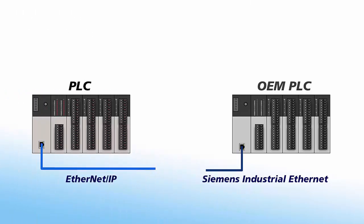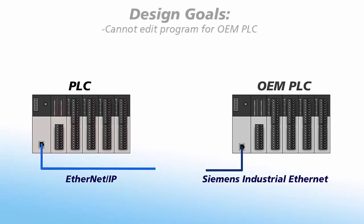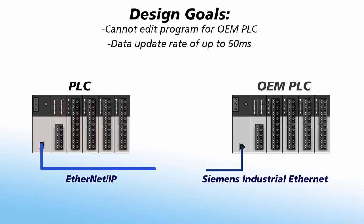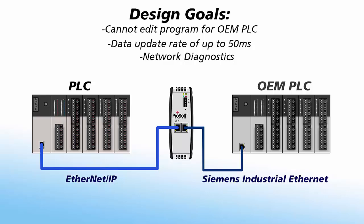For our next example, we'll take a look at a PLC that talks EtherNet/IP that needs to communicate with an OEM's PLC that talks Siemens Industrial Ethernet. In this example, we do not want to edit the program on the OEM PLC. We'll need fast data transfer of no slower than 50 milliseconds and be able to diagnose communication problems using the EtherNet/IP PLC programming software or an HMI communicating with it. Editing the program in an OEM's PLC to initiate data transfers could void the warranty, performance guarantees, or you may not have access to the programming software. Therefore, for this example, we will use our gateway as a client on Siemens Industrial Ethernet in order to communicate with the OEM PLC acting as a server.